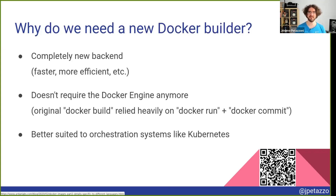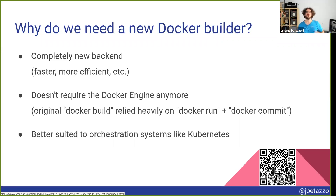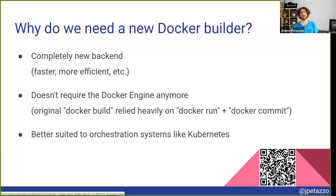So we changed the back end to use something called BuildKit. Multiple reasons. First, efficiency — we will see that there are many optimizations in BuildKit. Second, BuildKit doesn't require the Docker engine anymore. Docker Build traditionally requires running the Docker engine, and some folks have strong opinions about that. So BuildKit doesn't rely on the Docker engine anymore, and that makes it suited to orchestration systems.